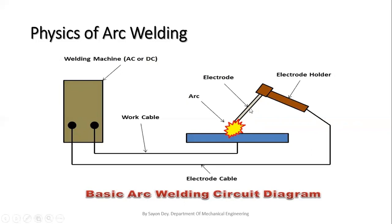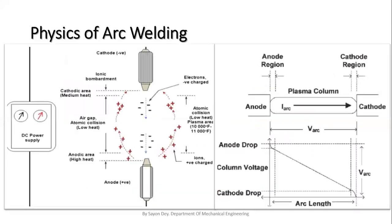Please watch the two portions: the electrode and the workpiece. I am going to show you in detail the physics of arc welding. In the left-hand side picture, we can see two portions — this is called the cathode and this is called the anode. In actual case, the cathode is the electrode and the anode is the workpiece. The cathode is connected to the negative terminal of the power supply and the anode to the positive terminal. Here DC power supply is shown, but it may be AC also — it depends on the welding type.